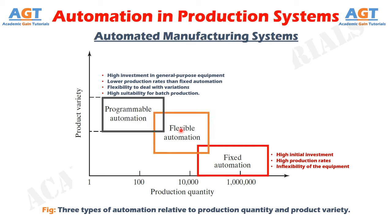Flexible automation is an extension of programmable automation. A flexible automated system is capable of producing a variety of parts or products with virtually no time lost for changeovers from one design to the next. There is no lost production time while reprogramming the system and altering the physical setup, tooling, fixtures, or machine settings. Accordingly, the system can produce various mixes and schedules of parts or products instead of requiring that they be made in batches. What makes flexible automation possible is that the differences between parts processed by the system are not significant, so the amount of changeover between designs is minimal.